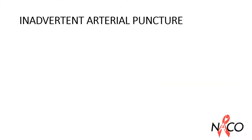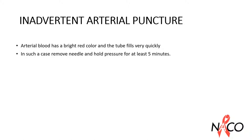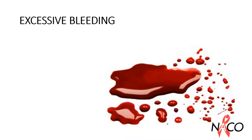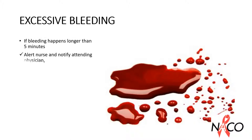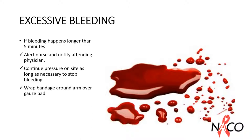Sometimes during phlebotomy there can be an inadvertent arterial puncture. Arterial blood has a bright red colour and the tube fills very quickly. In such cases, remove the needle and hold pressure for at least 5 minutes. If bleeding continues for longer than 5 minutes, alert the nurse and notify the attending physician. Continue pressure on the site as long as necessary to stop bleeding. Wrap a bandage securely around the arm over a gauze pad and leave it on the site for at least 15 minutes.